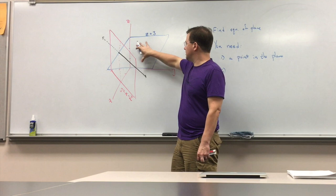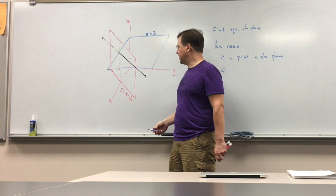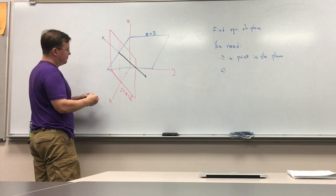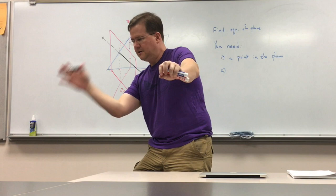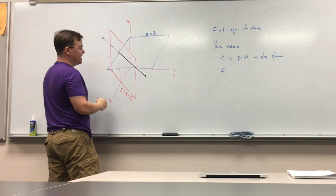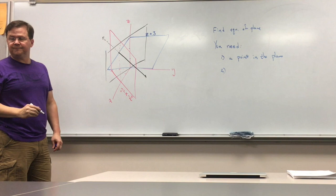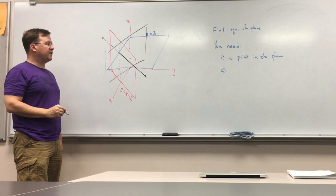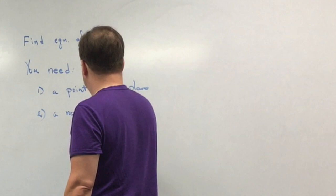What I'm trying to find is the equation of a plane that I haven't even drawn yet — it's challenging to draw. I'm imagining this plane right here and this plane right here, so the intersection is going to be along here, and the plane would be coming like this. The way we describe orientation is with a normal vector.